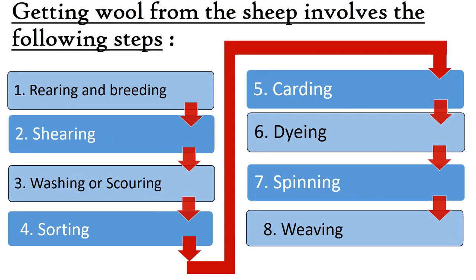Let's have a quick look at the different steps involved in getting wool from sheep: starting from Rearing and Breeding, then Shearing, then Washing or Scouring, after that Sorting, then Step No. 5 Carding, then Dyeing, then Spinning, and finally Weaving.